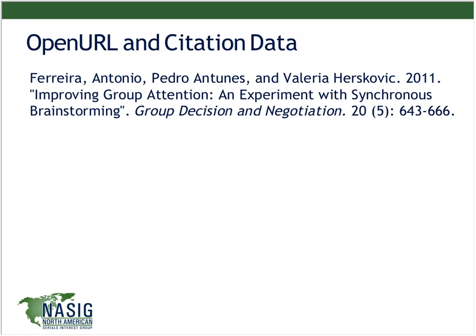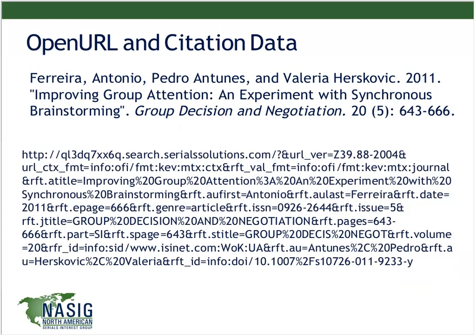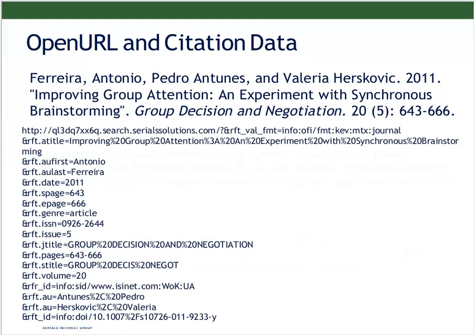Let's take a quick look at an open URL. It looks really messy until you do some formatting on it, and you realize that an open URL is basically just a little bit of header information at the top saying we're using the Serial Solutions link resolver, and then the rest of it is an article title, the author's first and last name, the date of the article, the start page, the end page, the fact that it's an article, the ISSN — essentially just citation information for a particular article. So that information gets passed off to the link resolver, and then the link resolver works with it.